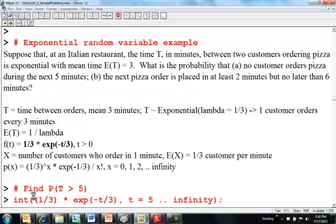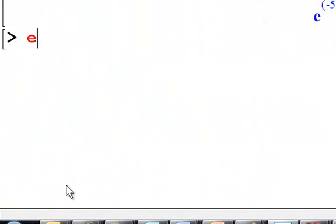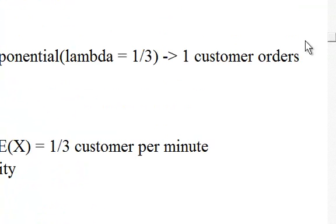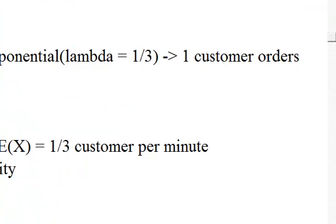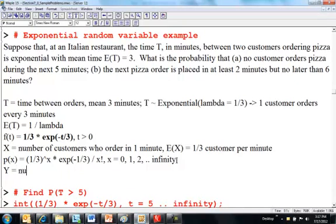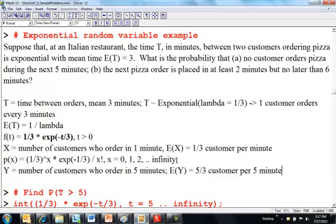And we're going to get something with an E. I should have done eval f or something. 0.189, okay. So, this is equivalent to asking, no customers in five minutes. So, the number of customers who order in one minute is a third of a customer. If we let Y equal number of customers who order in five minutes, we expect five-thirds of a customer per five minutes.